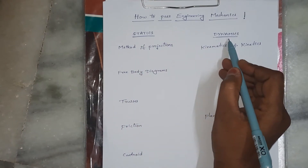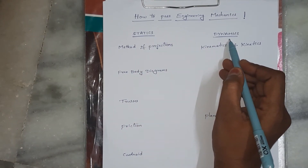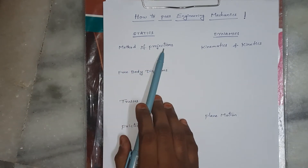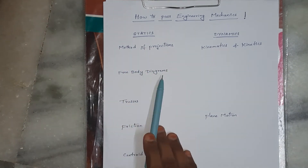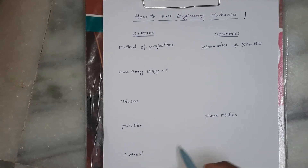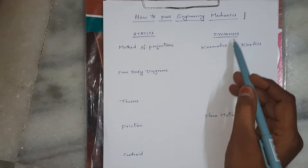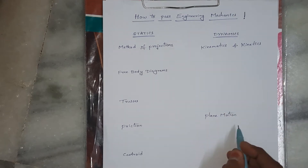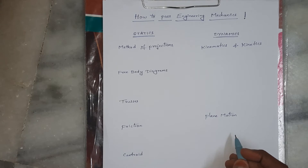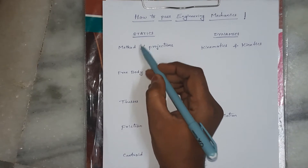Engineering Mechanics is generally split into two parts: Statics and Dynamics. In Statics, the topics are Method of Projections, Free Body Diagrams, Trusses, Friction, Centroid, and Moment of Inertia. In Dynamics, the topics are Kinematics, Kinetics, and Plane Motion. To get full marks, focus on these topics.